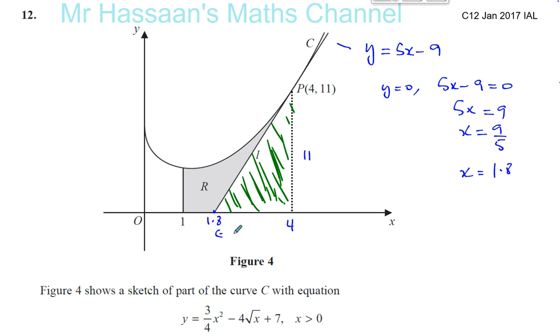So I know that this point is 1.8. So I know that the base of the triangle is 4 minus 1.8, which is going to give you 2.2. 2.2 plus 1.8 will give you 4. So I can work out the area of the triangle. And I can work out the area under the curve between 1 and 4. And that will leave me with the shaded area.